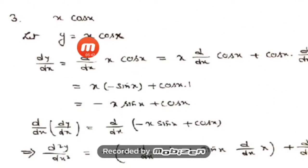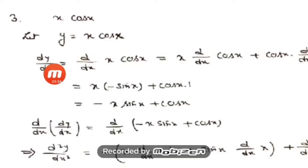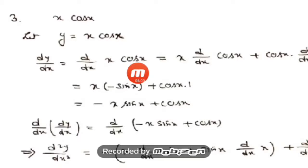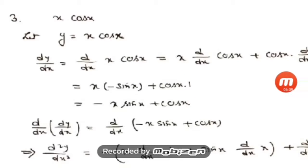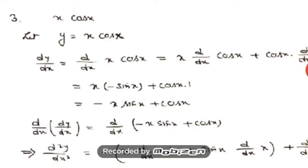Question number 3 is x·cos(x), which is a product function. Let y = x·cos(x). Take derivative using the product rule: first function × derivative of second + second function × derivative of first. So dy/dx = x·d/dx(cos x) + cos x·d/dx(x) = x·(−sin x) + cos x·(1) = −x·sin x + cos x.